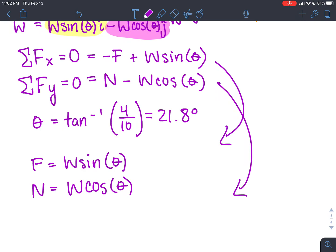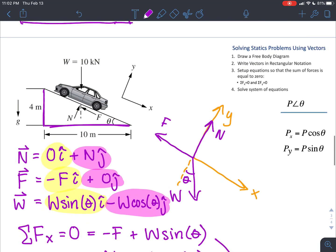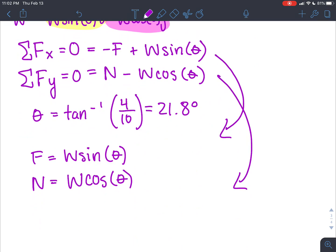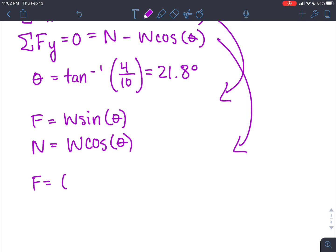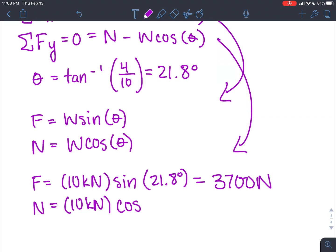And since we know what W is, which is our 10 kilonewtons from the problem, that means that we can actually solve both of these. So we know theta now and we know W. So we can say F equals 10 kilonewtons times the sine of 21.8 degrees. And that gives us F equals 3,700 newtons. And our normal force is going to be, again, 10 kilonewtons times cosine of that 21.8 degrees. And that gives us 9,300 newtons.